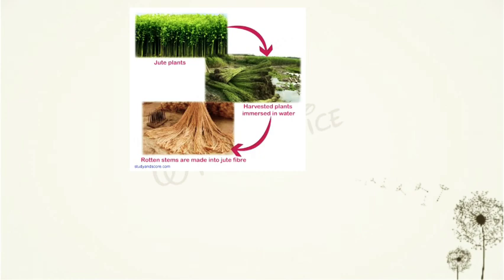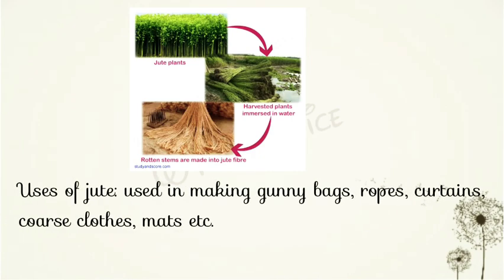Usage of jute — जूट के उपयोग: Used in making gunny bags — इससे बोरे बनाने के काम में उपयोग किया जाता है। Ropes — रस्सियाँ बनाई जाती हैं। Curtains, coarse cloths, mats etc. — इनसे परदे, मोटे कपड़े और चटाइयाँ भी बनाई जाती हैं।